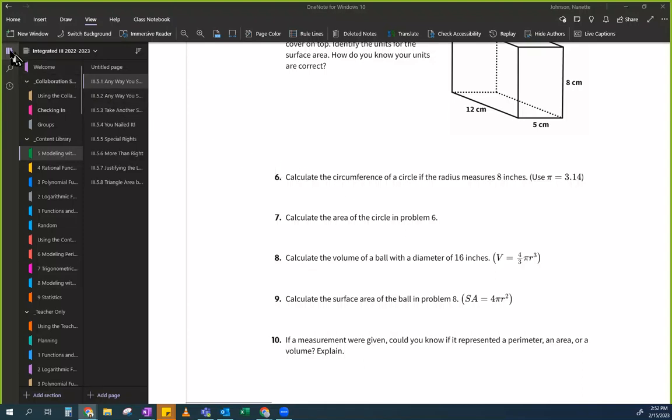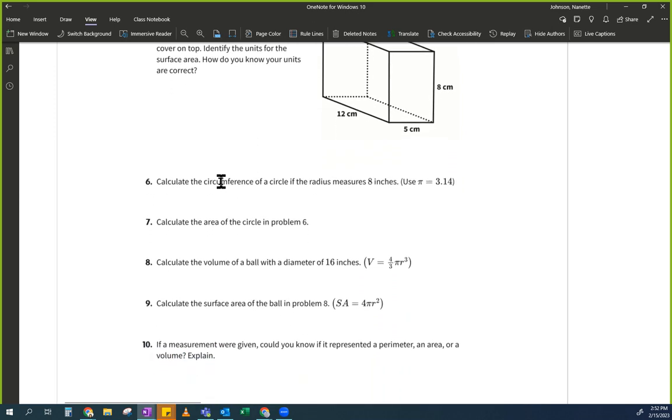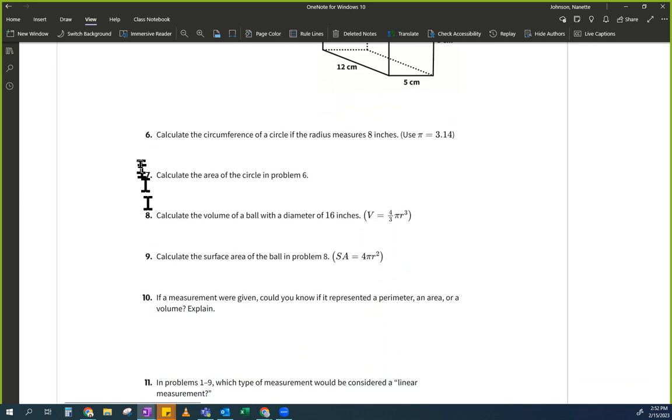Okay, so we are in 5.1. And it's just review because this is the ready problems. But we're going to do problems six through nine, which is about circumference, area, volume, surface area.